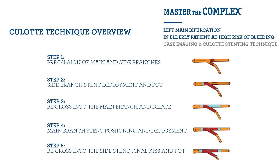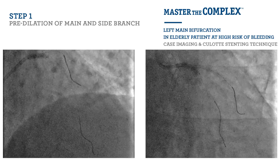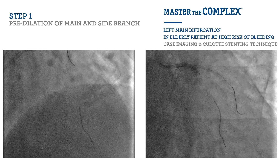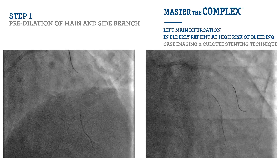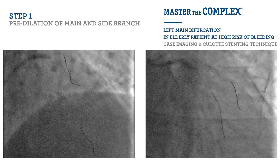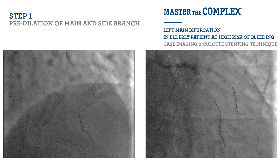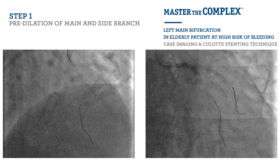Given the appearances on the coronary IVUS, we elected to treat this disease using the CLOT technique. These are the five steps we will go through. The first step in the CLOT technique is to ensure adequate lesion preparation prior to deploying any stents. Given the calcified nature of the disease seen on the IVUS, we chose a 3 mm cutting balloon to pre-dilate both the proximal left circumflex and the left anterior descending coronary arteries back into the left main stem.